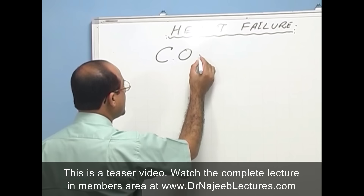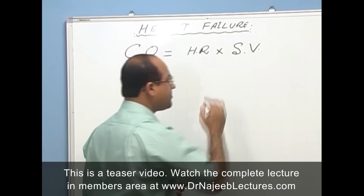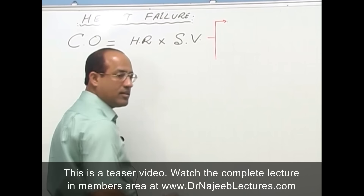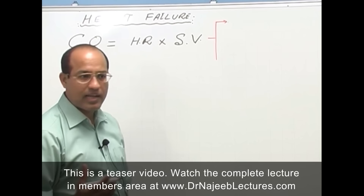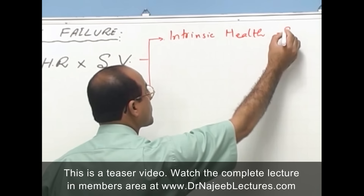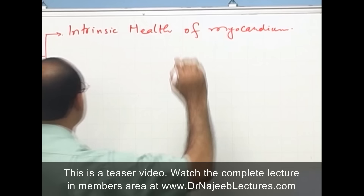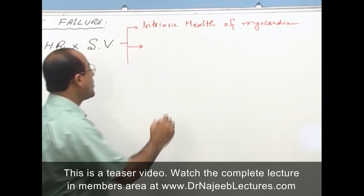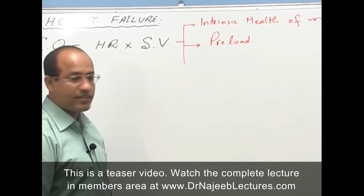Cardiac output is equal to heart rate multiplied by stroke volume. There are many determinants of stroke volume, but the three most important are: number one, intrinsic health of the myocardium; number two, preload; and number three, afterload. I will explain what preload and afterload mean.